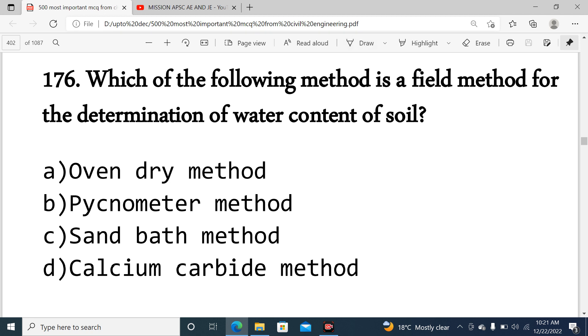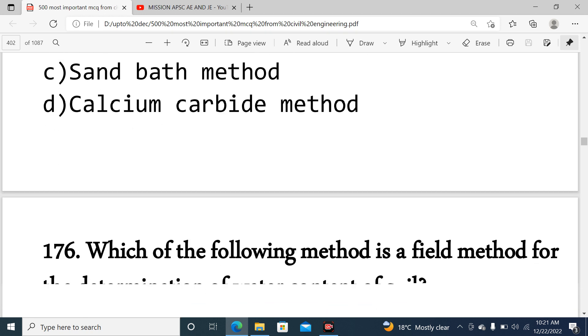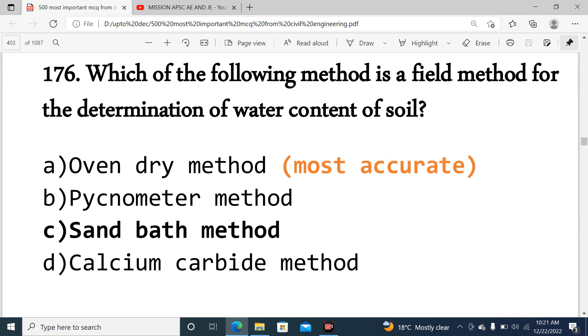What is the field method? The sand bath method is a field method for water content determination of soil. So option C is correct.